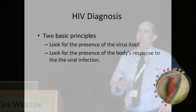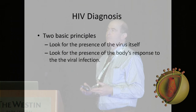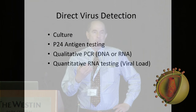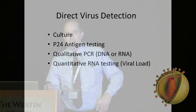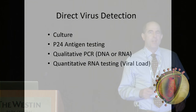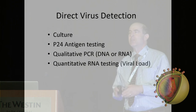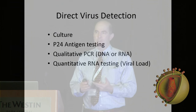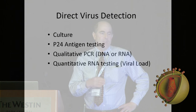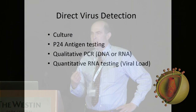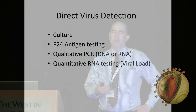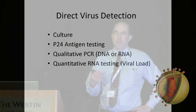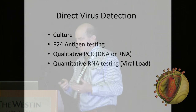To diagnose HIV in the laboratory, we can look for the presence of the virus or a viral protein, or for the body's antibody response. Direct virus detection options include culture — if you have a P3 facility — P24 antigen testing by ELISA, which is now incorporated into fourth-generation testing, qualitative PCR (DNA or RNA) often used for neonatal diagnosis and recommended in the fourth-generation algorithm, and quantitative PCR — HIV viral load — used to monitor infected patients.